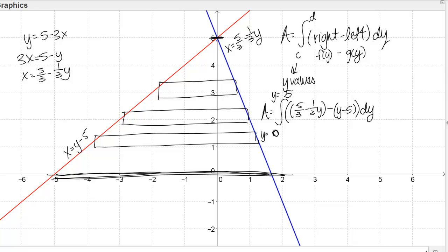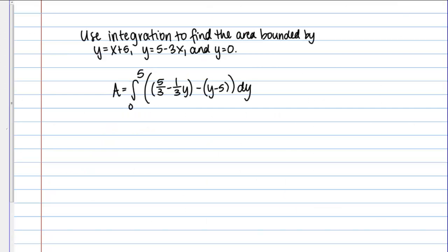This integral, if I evaluate it, will give me the area of this region. Let's just take a minute and evaluate this integral. I can start by just expanding a little bit inside my integral. I can write that as 5 thirds minus 1 third y minus y plus 5. Then if I do a little bit of combining of terms, I should get the following: 20 thirds minus 4 thirds y and dy.